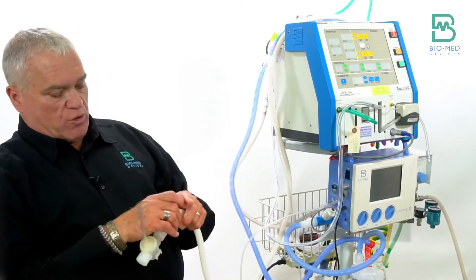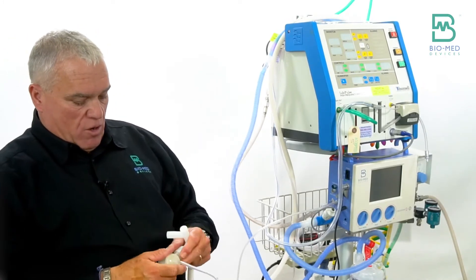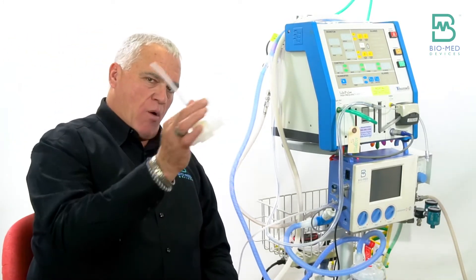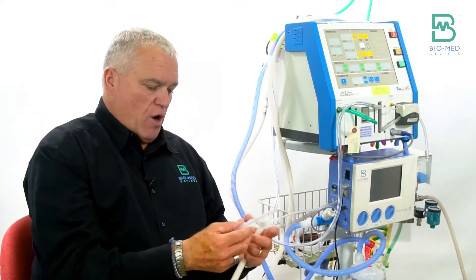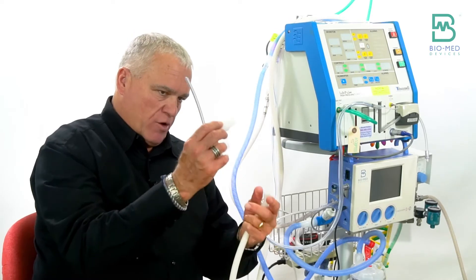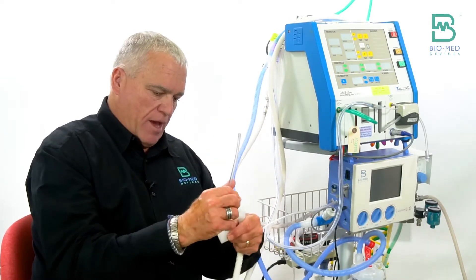Then at the expiratory limb of the circuit, what we're going to do is add our exhalation valves so that we can connect it to the Crossvent. That's where we need this other white adapter to make that connection.